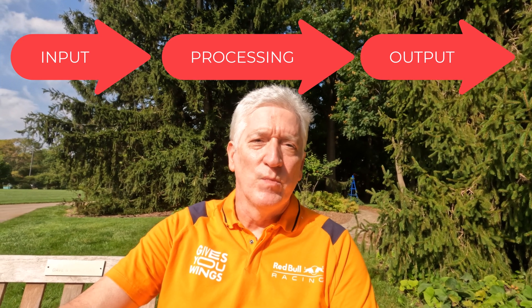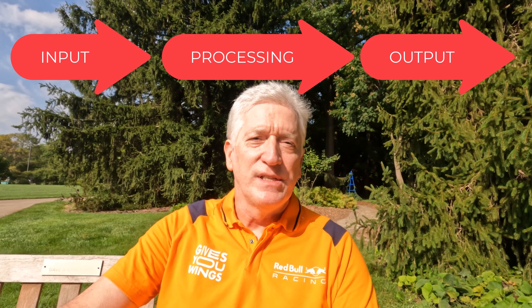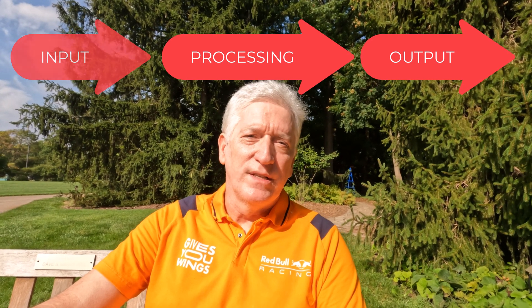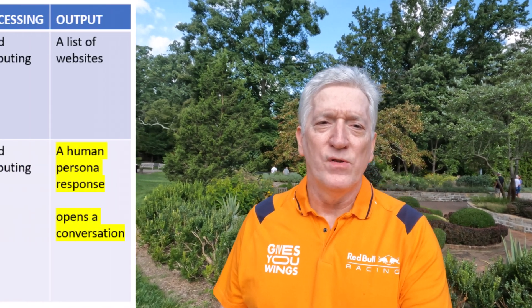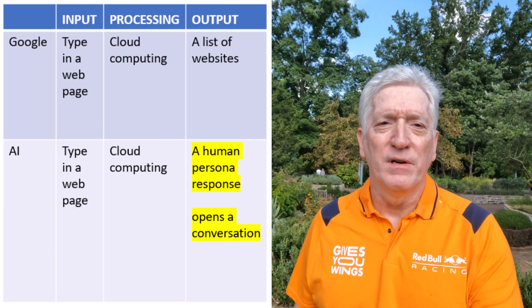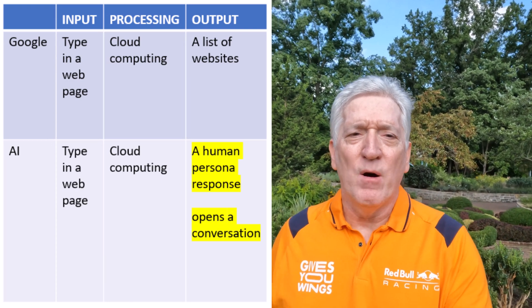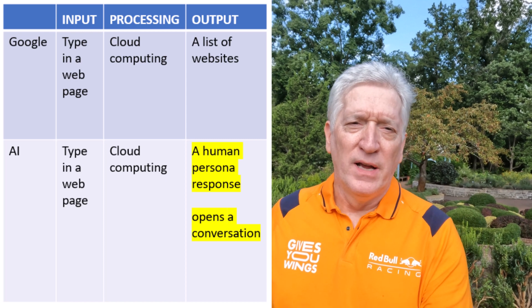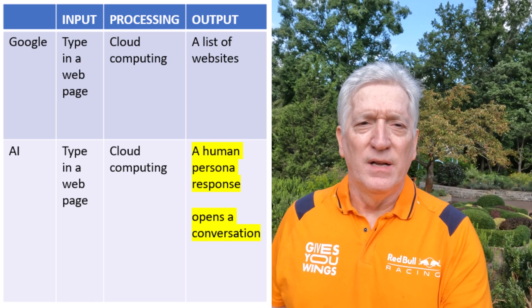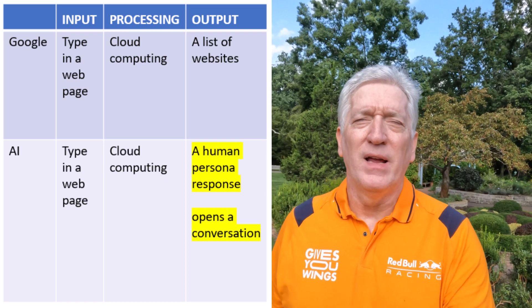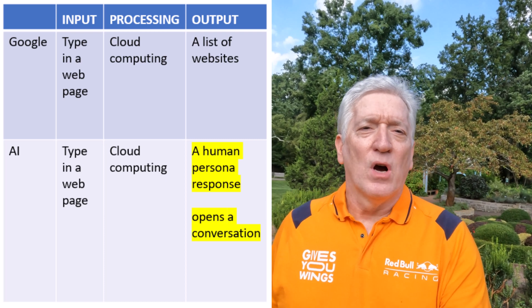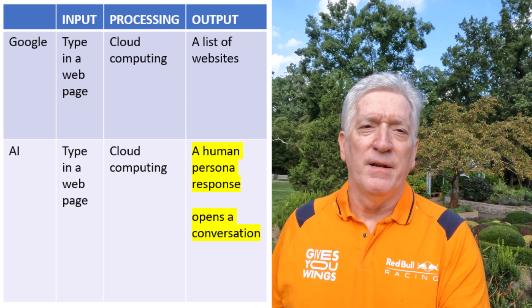But Google is just a computer program — it uses input, processing, and output. Since it's in the cloud, make sure you don't type anything private or protected into the Google search bar. Now I want to build on that example and compare it to artificial intelligence, where you still have input, processing, and output — but the key difference is that the output on the back end of the AI model is a human persona, instead of a list of web pages.